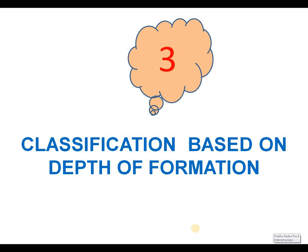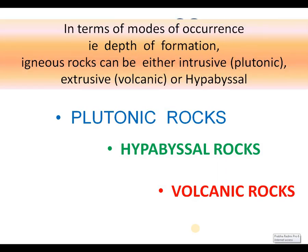Classification based on depth of formation: by considering the mode of occurrence, igneous rocks may be either intrusive, called plutonic igneous rocks, or extrusive igneous rocks, that means volcanic igneous rocks, or hypabyssal rocks. According to depth of formation, igneous rocks are divided into three categories: plutonic rocks, hypabyssal rocks, and volcanic rocks.